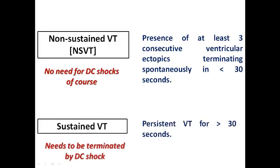Sustained VT means persistent VT for more than 30 seconds, and in most cases it needs to be terminated by DC shock. According to the ESC guidelines for ventricular arrhythmia, VT should be terminated by DC shock regardless of hemodynamic status, because it is considered malignant — it may degenerate into VF and cause sudden cardiac death. That is why VT is considered a malignant arrhythmia requiring admission.